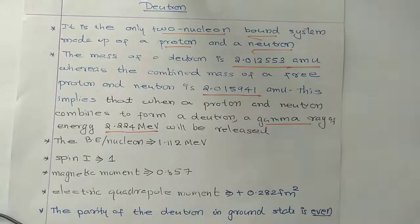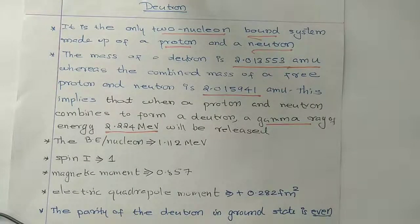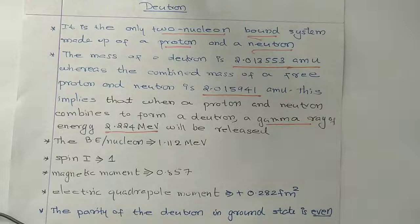This is the proton and neutron. The calculated mass is 2.015941 amu. This is the mass defect. This is the energy of gamma radiation side. This is 2.224 amu.